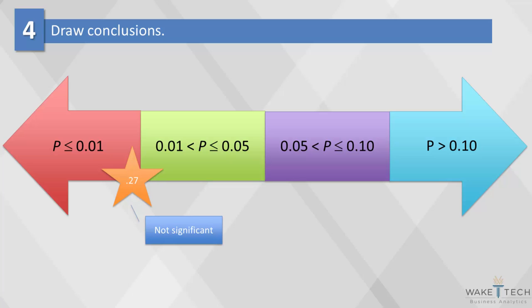As an example, a p-value of .27 would not be significant against H0. A p-value of .01, on the other hand, would be highly significant against H0.